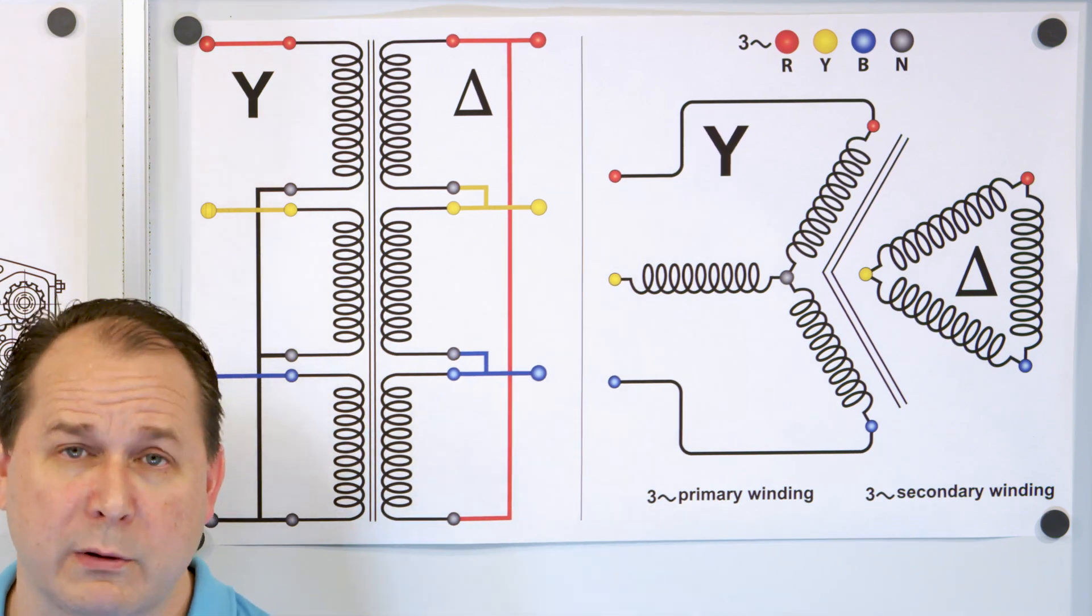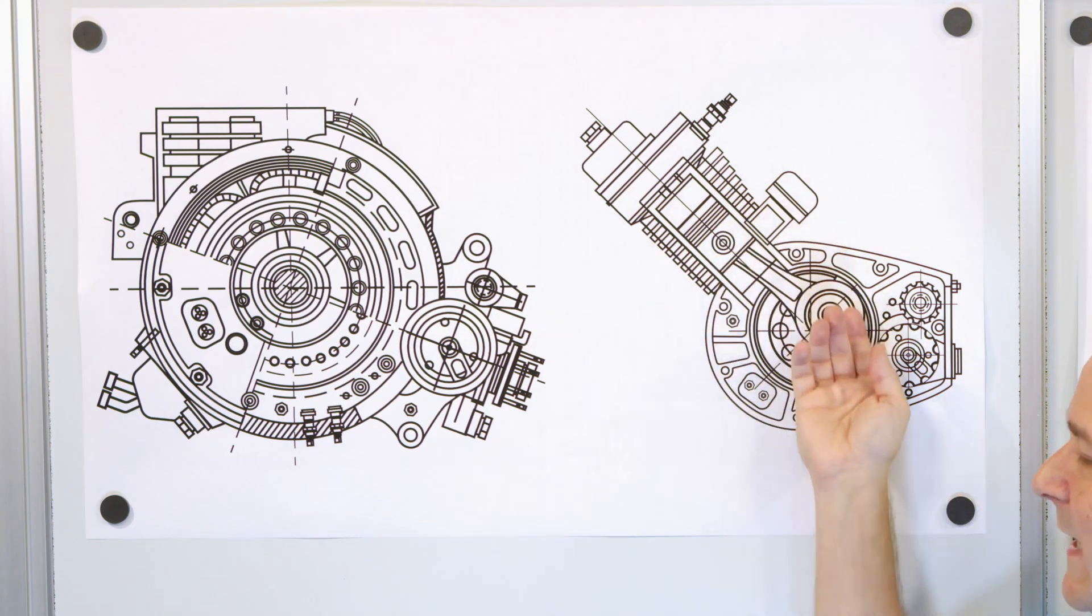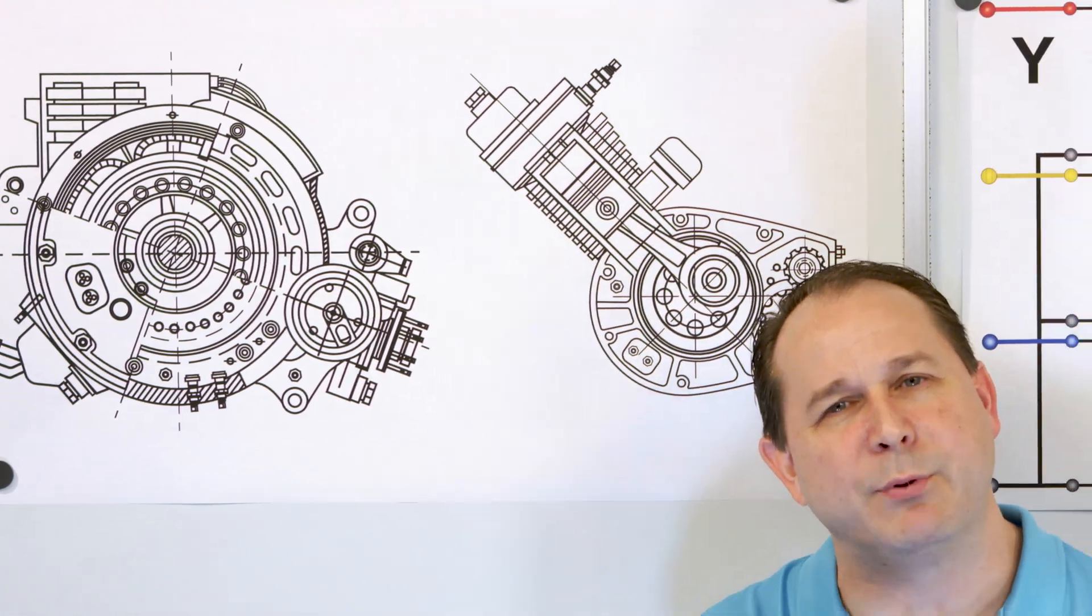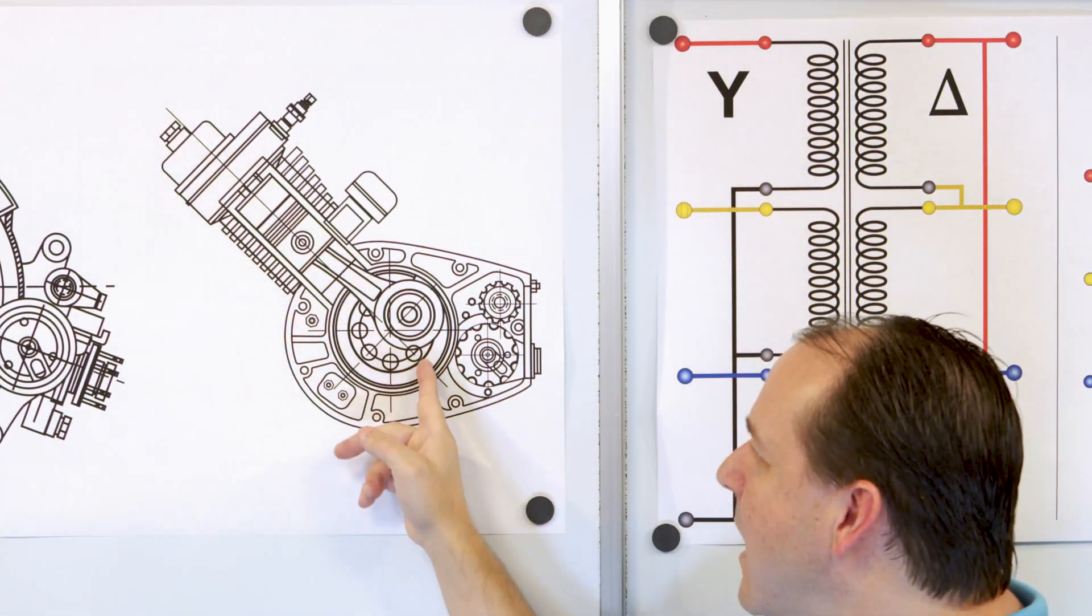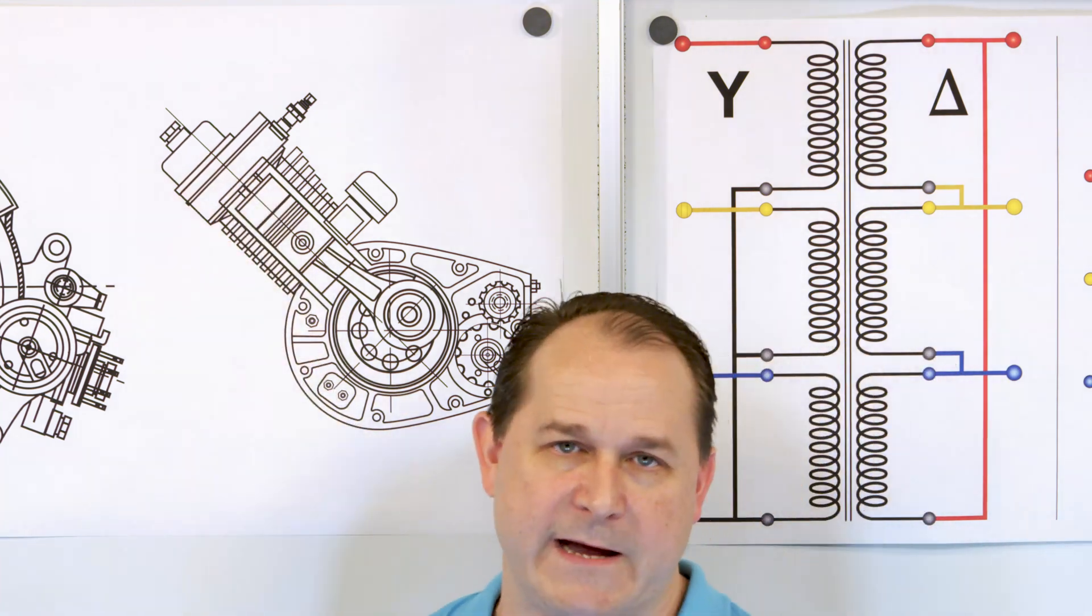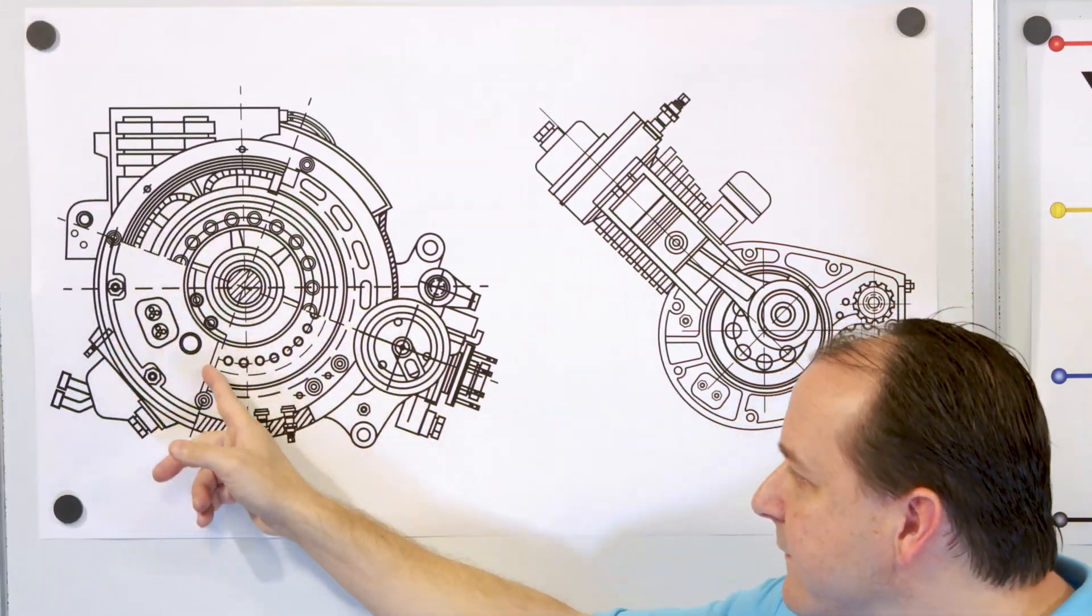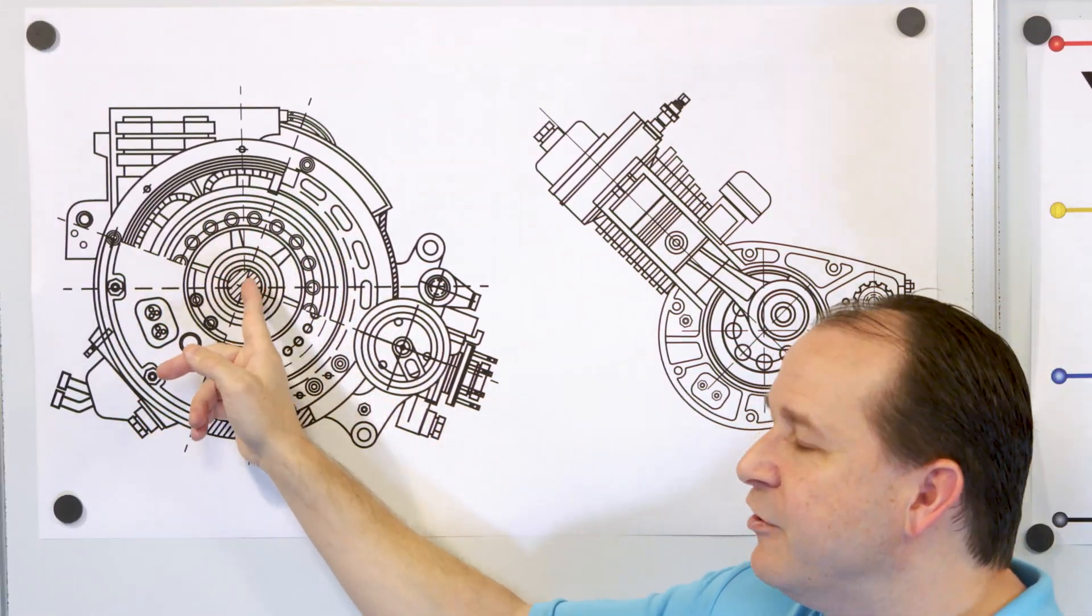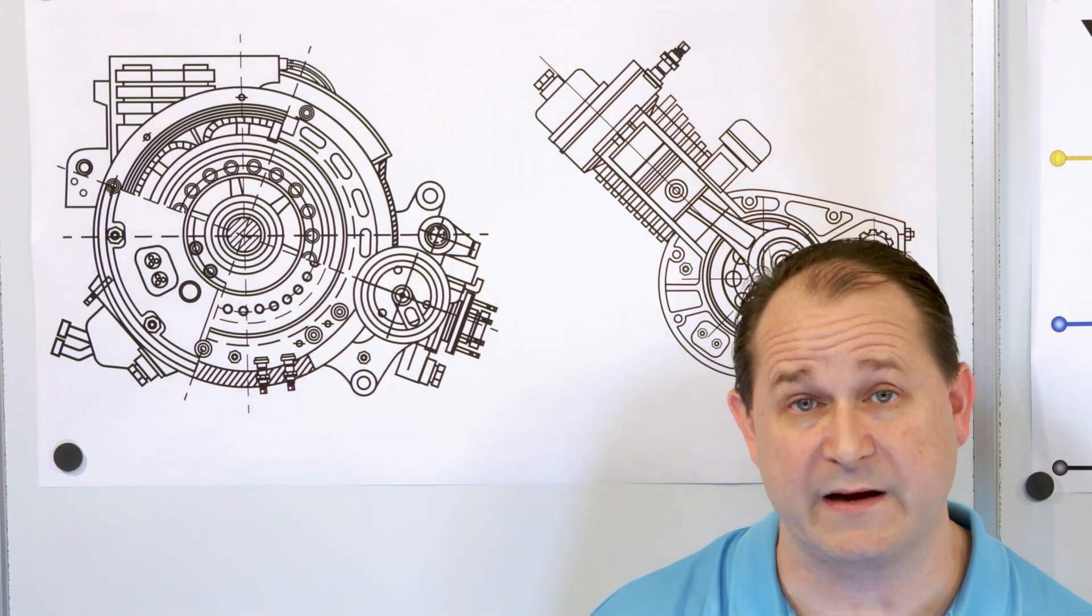The original prototype machine had a base plate of pre-famulated amulite surmounted by a malleable logarithmic casing in such a way that the two spurving bearings were connected in a direct line with a panometric fan, the latter consisting simply of six hydrocoptic Marzal vanes so fitted to the ambifacient lunar wane shaft that side fumbling was effectively prevented.